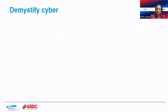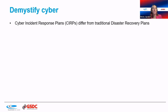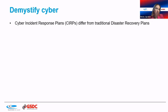The cyber incident response plan is not the same as a disaster recovery plan. Traditional DR assumed one data center would be unavailable due to flooding or fire, with an alternate environment standing by. But cyber risk means both your production and DR environments could be affected simultaneously by the same malware, making your DR strategy completely ineffective — requiring manual workarounds and business continuity plans.